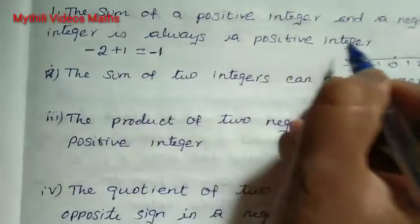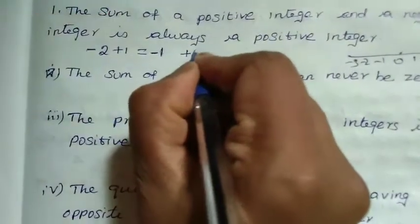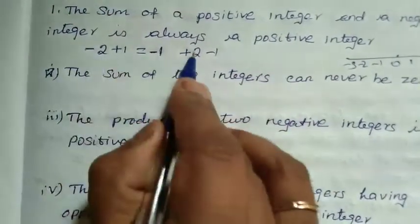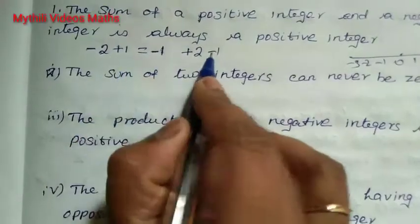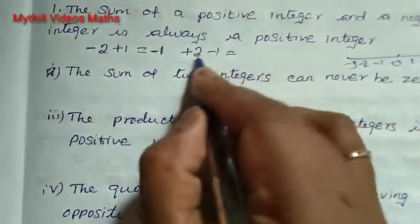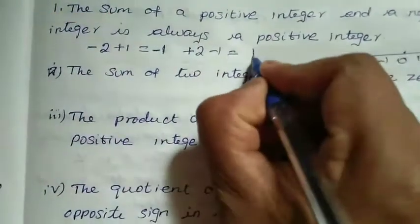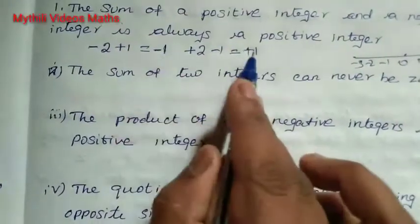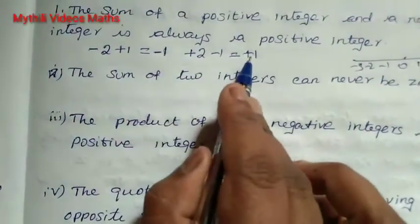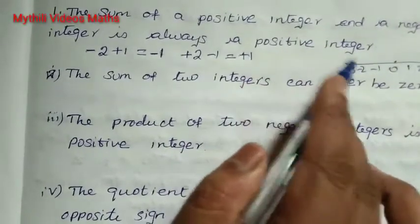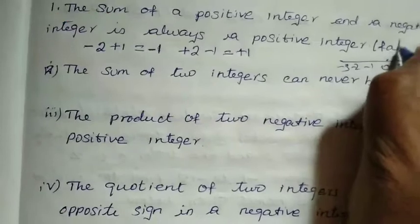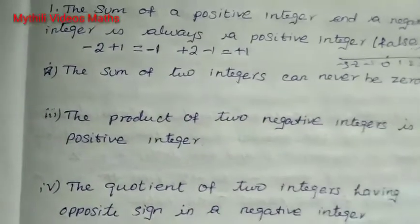Now suppose we take plus 2 and minus 1. The result is positive 1. But the question says the sum is always a positive integer — that is not always true. Therefore the answer is false.